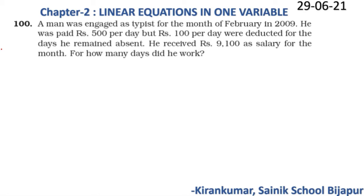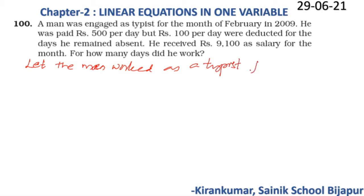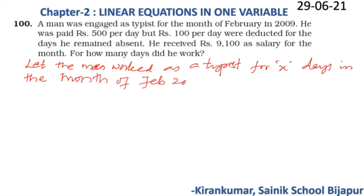February 2009 is not a leap year, so the month has 28 days — however, the instructor states it has 29 days. The number of days he was absent is (29 − x). The total amount paid for working days is 500x.